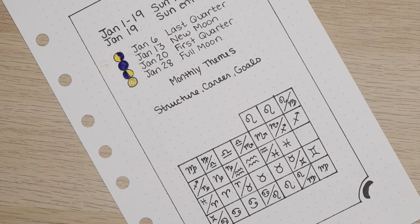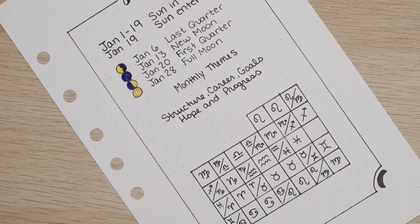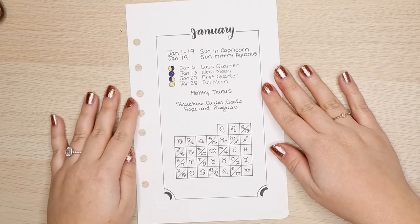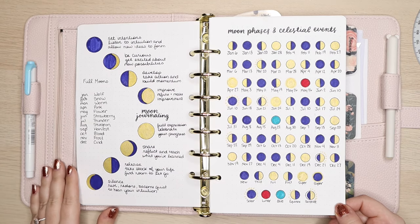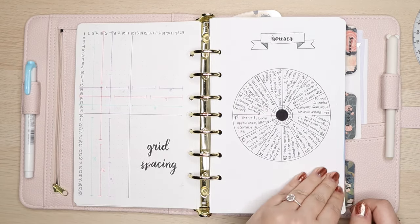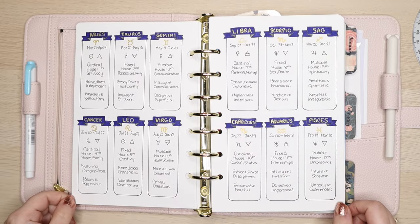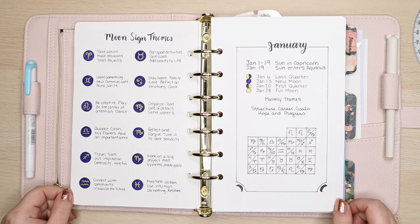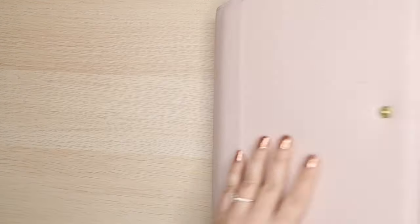And then lastly, I wrote down the monthly themes based on the sun signs. So Capricorn and Aquarius. Capricorn represents structure, career, and goals. And Aquarius represents hope and progress. And I got this information from my moon journal. And now it's time for the final flip through. As you can see, I kept these spreads very clean, very plain, didn't add too much decoration because I just wanted to show you the information you would need if you want to recreate these. And then of course, if you do recreate these, you can jazz them up, add doodles, go crazy.